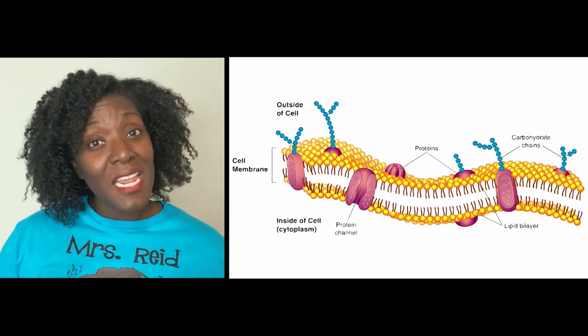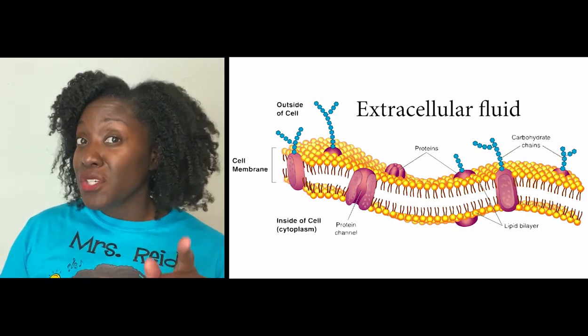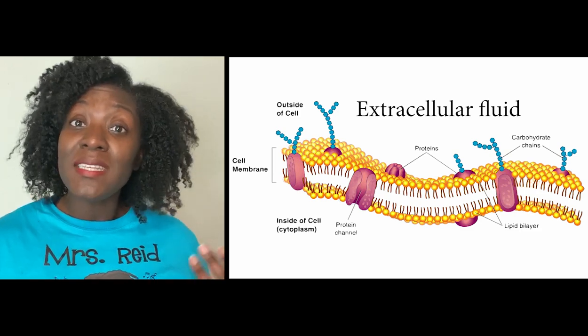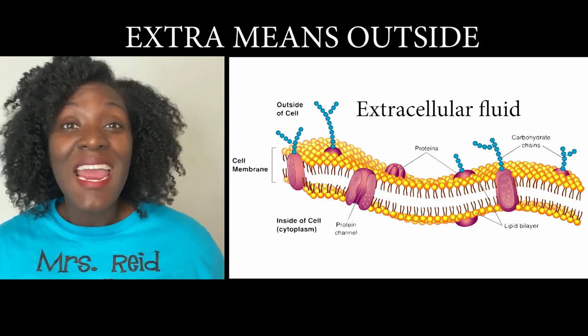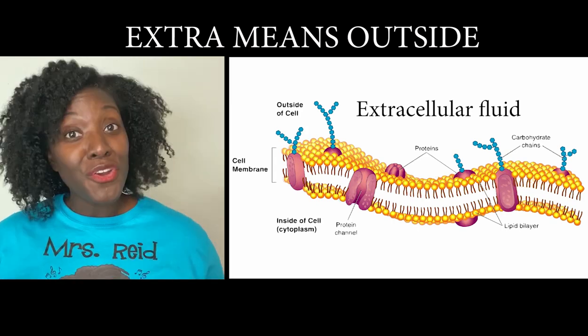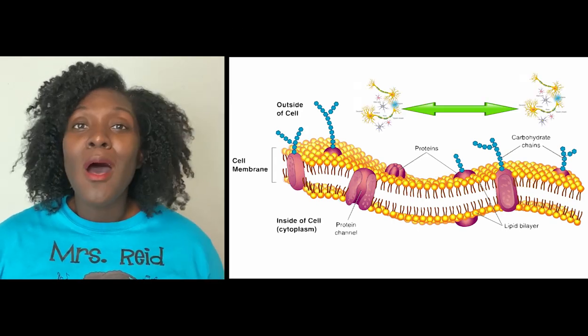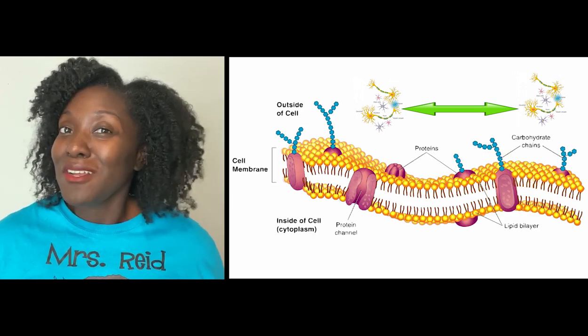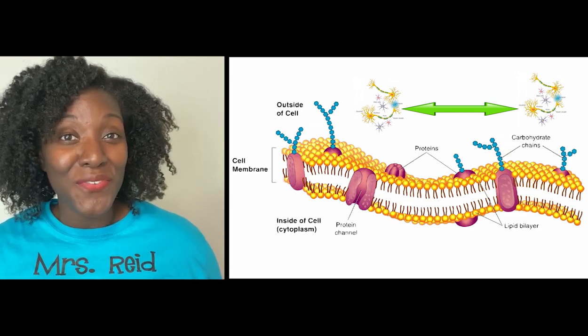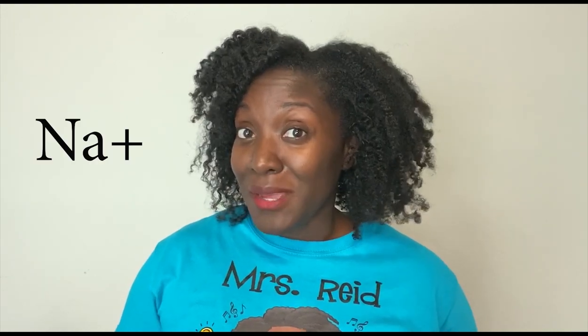Body fluid that is not contained in your cells is called extracellular fluid — the prefix 'extra' means outside, and this fluid is found outside of your cells. Neurons and neuroglia are embedded in the extracellular fluid, also known as ECF. ECF is mostly made up of water with dissolved salts and other charged ions, such as sodium, potassium, and chloride.